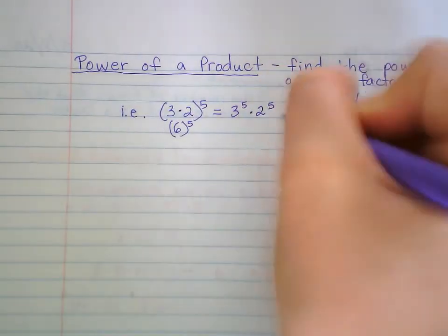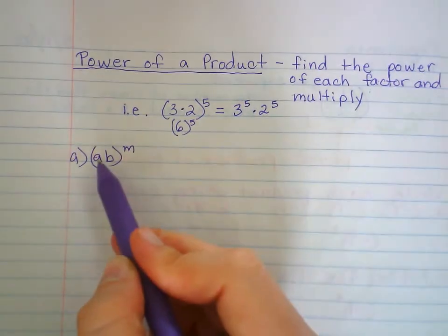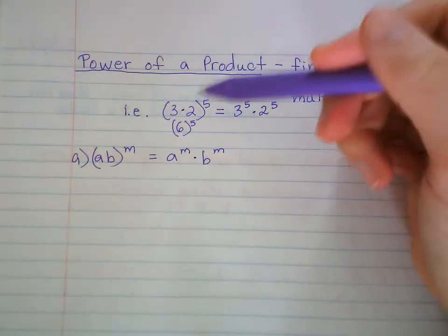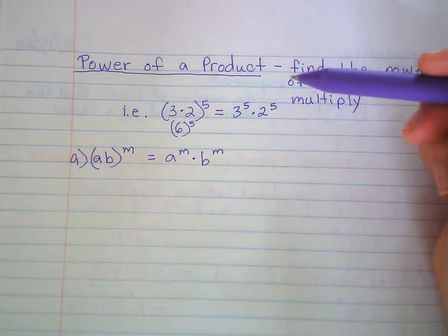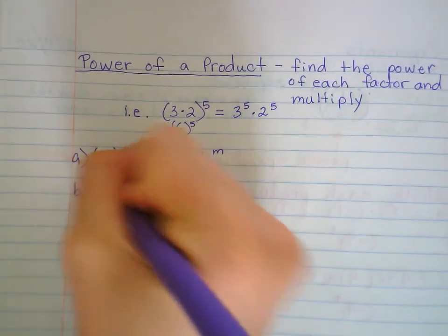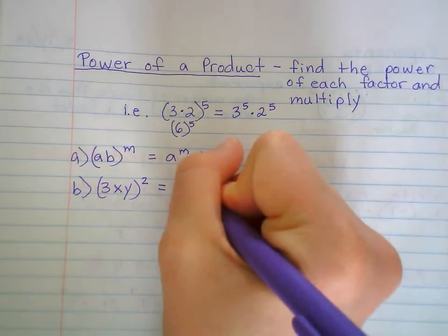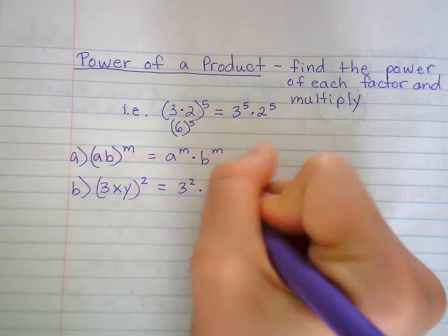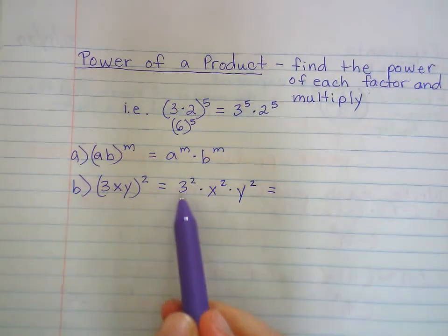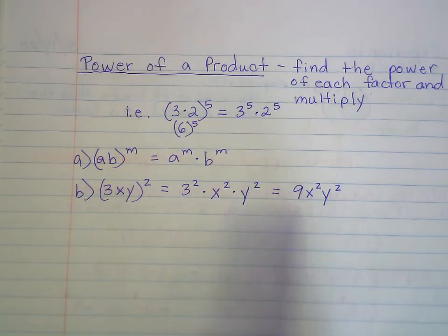In general: a times b to the m power is exactly the same as a to the m times b to the m. So if you have numbers you can multiply — just know it's 6 to the 5th. So if you had 3, x, y all to the 2nd, just know that's exactly the same as 3 squared times x squared times y squared. 3 squared is 9, so it's 9 x squared y squared.